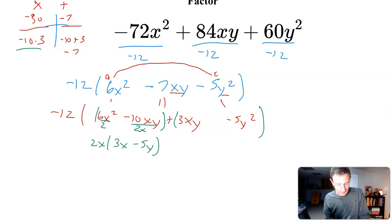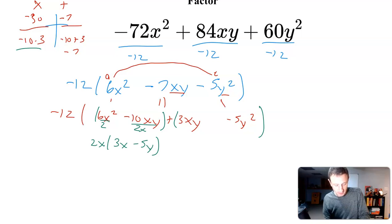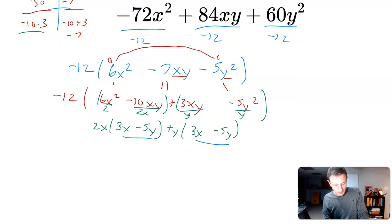From the second set of parentheses, 3xy - 5y², I could factor out y, so 3x - 5y. All I'm doing is taking out that variable. What you should notice is 3x - 5y is in both parentheses. So that means I'm going to have this as (3x - 5y)(2x + y). And then we bring back that -12.